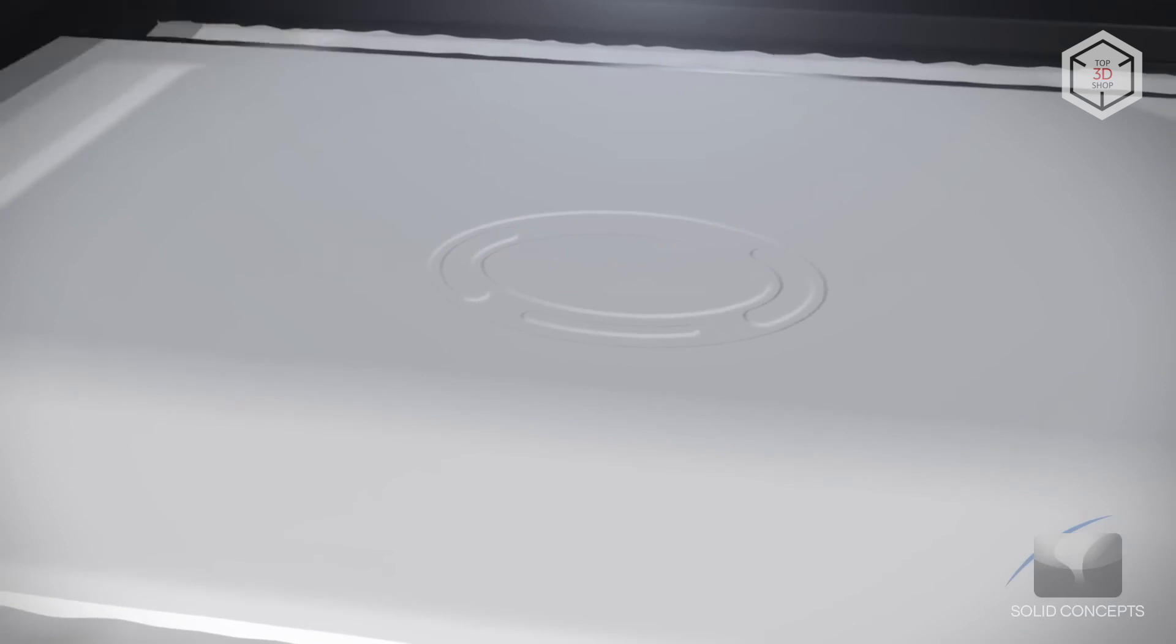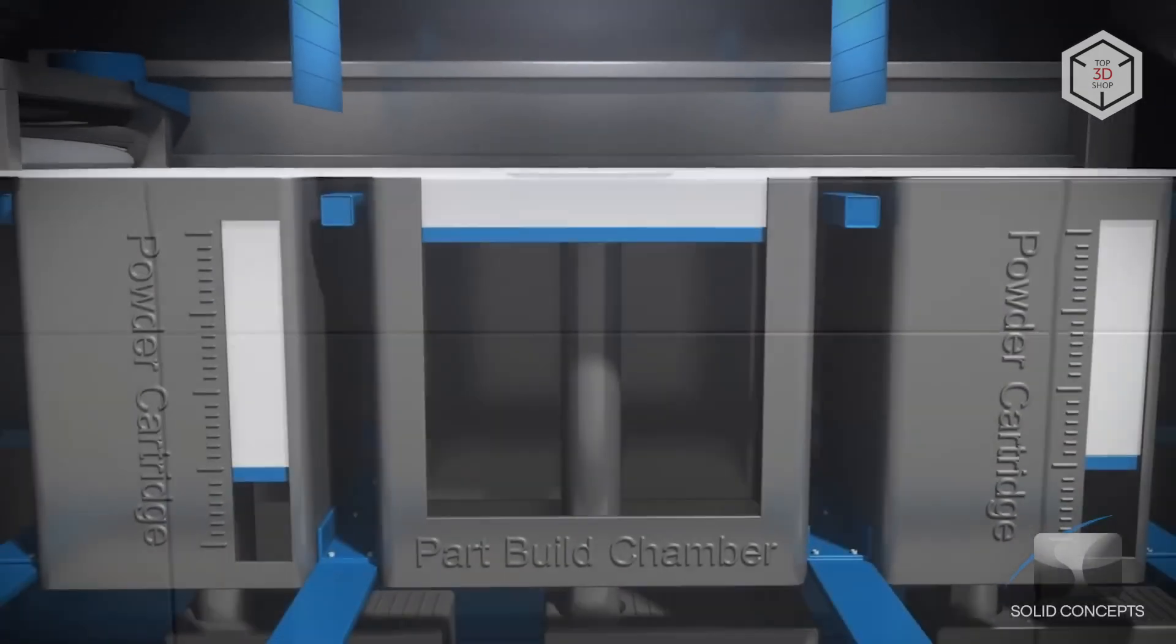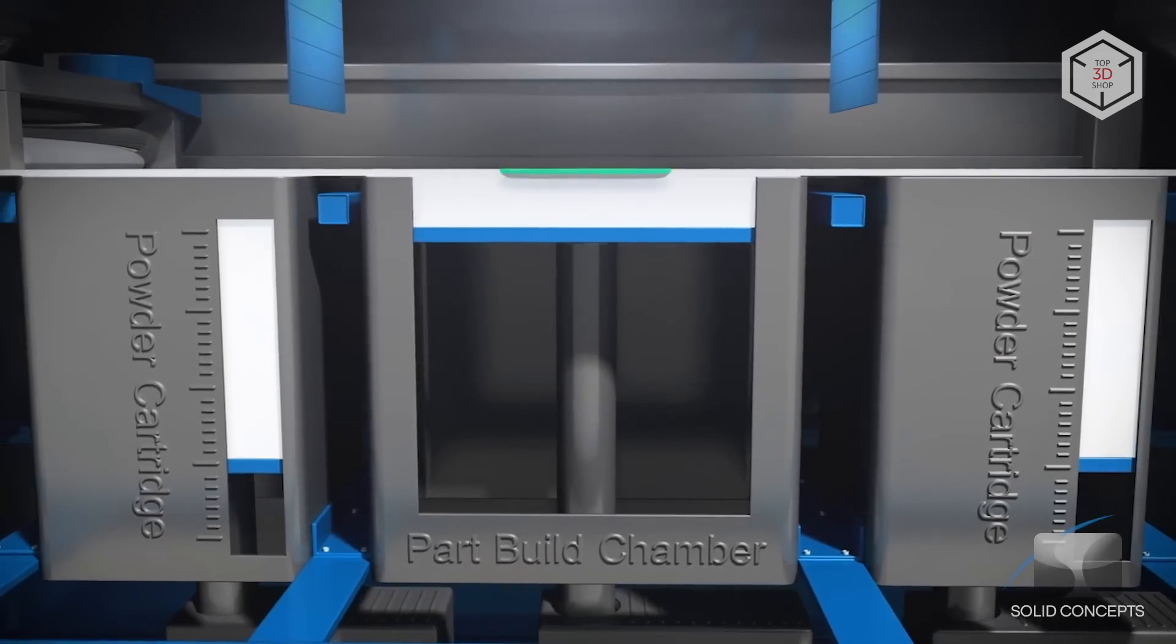To start printing, you need a CAD file or a 3D scan, which you'll export in a 3D printable file format like OBJ or STL. Before the printing process commences, the printer preheats the build chamber, which should be filled with powder to the temperature just below the sintering point, and printing begins.